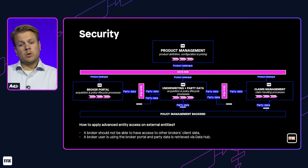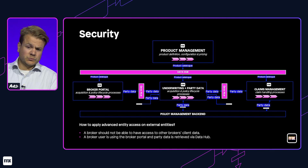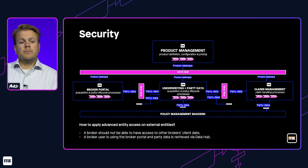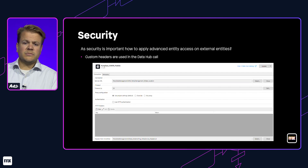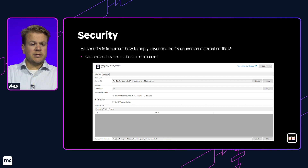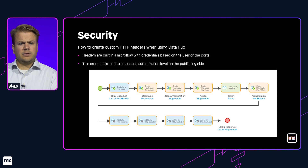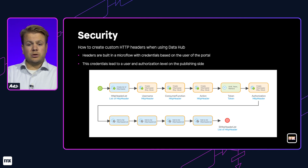One of the challenges we had was on security. As Christian mentioned, security is really important for an insurance company — you don't want to grant a broker access to another broker's client data. So we need to identify the broker who's using the portal when consuming the Data Hub. The default security is constant-based authentication, but as we need to identify the user, we applied custom headers in the Data Hub call. Custom headers are built up in a microflow where the credentials of the user are used, and on the consuming side, the application returns a session based on the user's credentials.